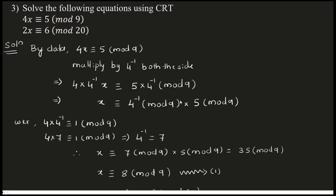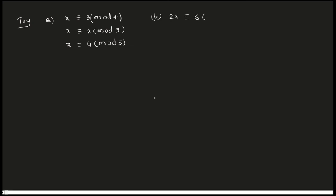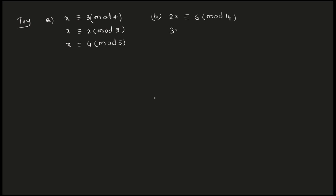If you want to try some more examples, I will give them as homework. For practice, solve the following equations using CRT: (1) x ≡ 3 mod 4, x ≡ 2 mod 3, x ≡ 4 mod 5. (2) 6x ≡ 6 mod 14, 3x ≡ 9 mod 15, 5x ≡ 20 mod 60 — this second example is just like the one I solved today.